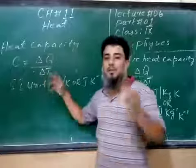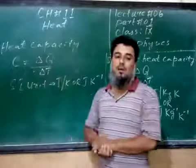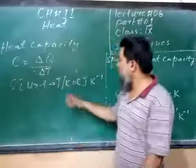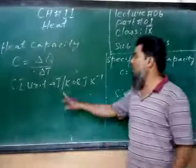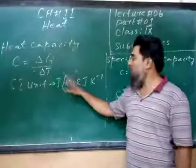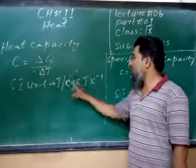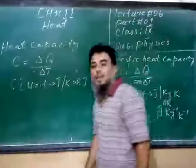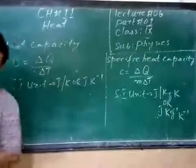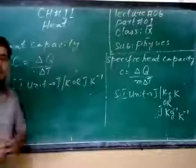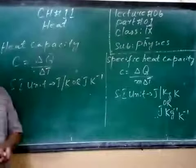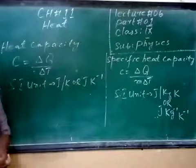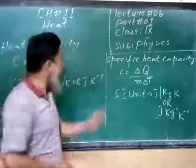The ratio of heat to the change of temperature is called heat capacity. The unit of heat capacity is Joule per Kelvin. If you see the unit, it is Joule per Kelvin — so heat capacity is expressed in Joules per Kelvin. The amount Q divided by delta T gives us heat capacity in Joules per Kelvin.